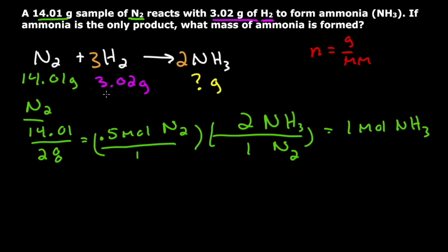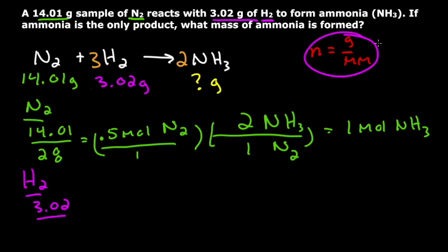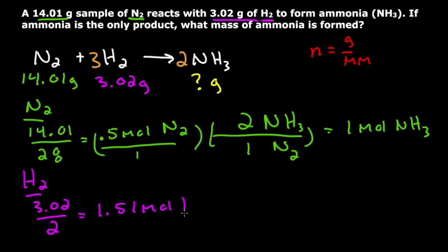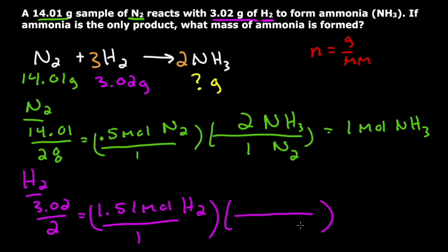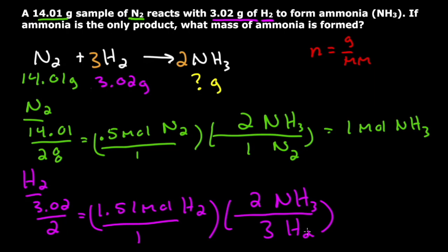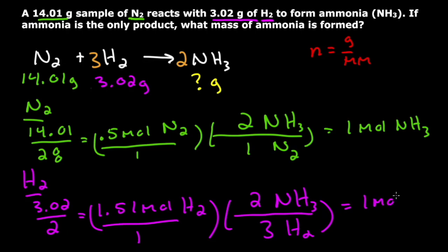Now I need to figure out how many moles of NH3 the H2 can make. I have 3.02 grams of H2, and I divide by the molar mass of H2, which is 2. So 3.02 divided by 2 gives me 1.51 moles of H2. Going back to the balanced reaction, the coefficient for H2 is 3 and for NH3 is 2. So I put H2 on the bottom with a 3, and NH3 on top with a 2. That gives me 1.51 times 2 divided by 3, which equals 1 mole of NH3.